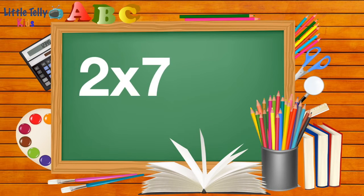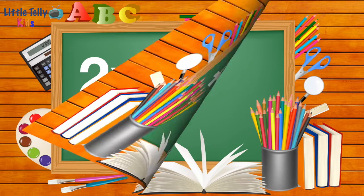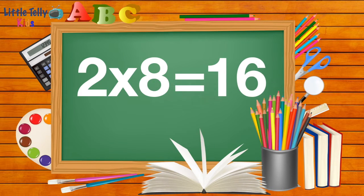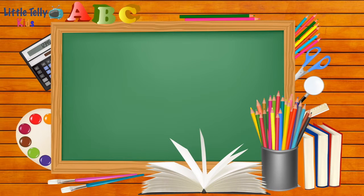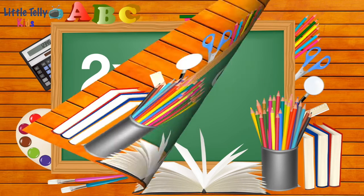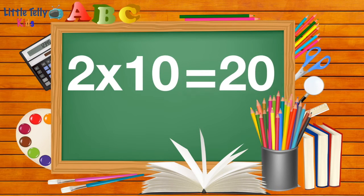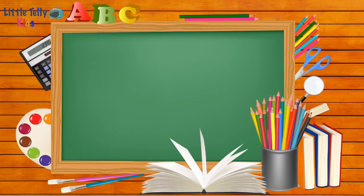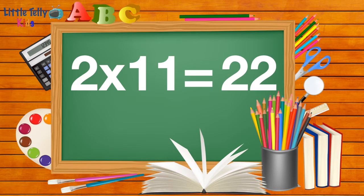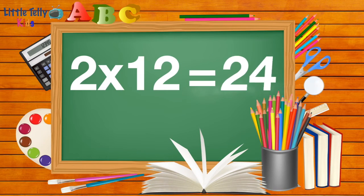Two sevens are fourteen. Two eights are sixteen. Two nines are eighteen. Two tens are twenty. Two elevens are twenty-two. Two twelves are twenty-four.